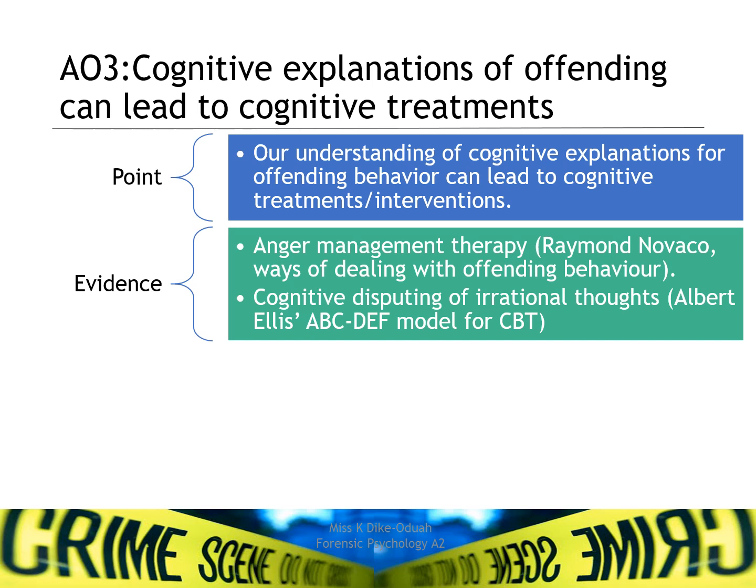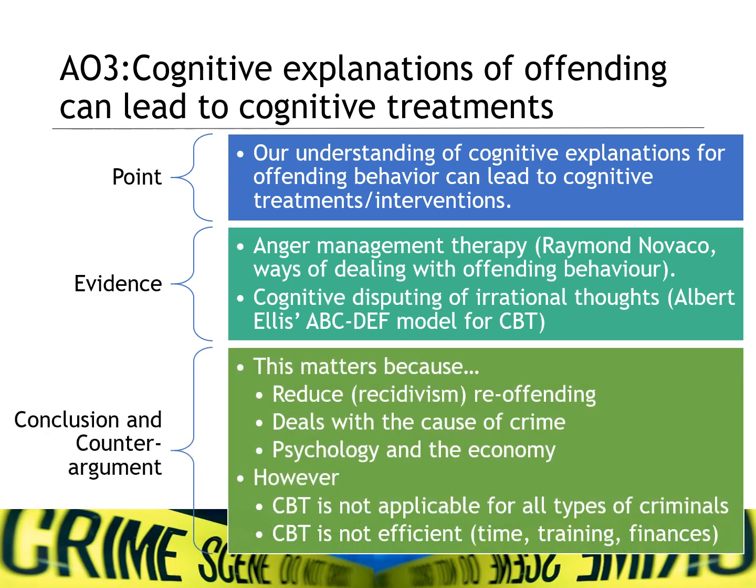There are three ways in which we dispute: we ask ourselves, is it logical to think this way? Is there any evidence for me to think this way? And is it practical for me to think this way? All of these could be ways to tackle irrational thinking before it leads to criminal behaviour. This matters because it might mean we are able to reduce recidivism — reducing re-offending — by dealing with the cause of crime rather than simply punishing the offender.